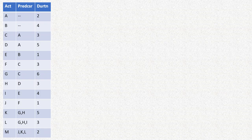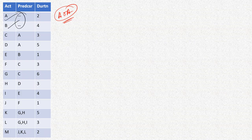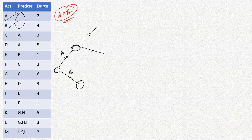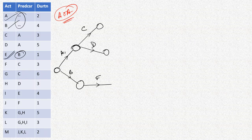We will start with the activity-on-arrow method. The first two activities are not dependent on any other activities — that means A and B — so you can start them from the beginning, from the first node itself. This is activity A and this is activity B. Then after A is completed, two more activities can be started: C and D. Both are dependent on activity A, so from the node representing completion of A we can start C and D. From completion of activity B we can start activity E.